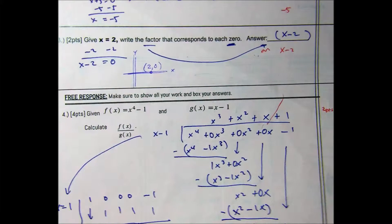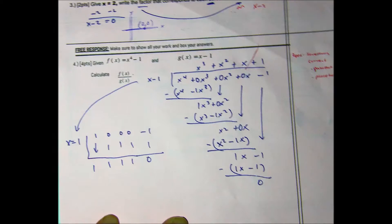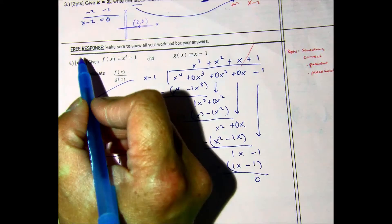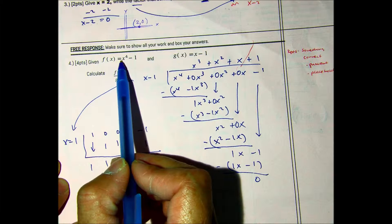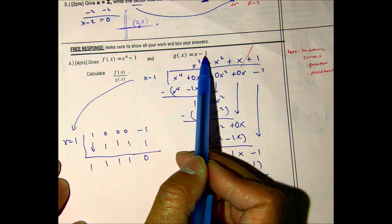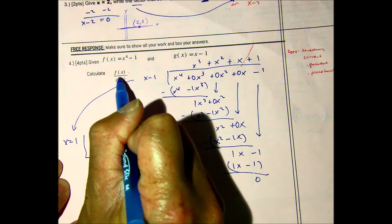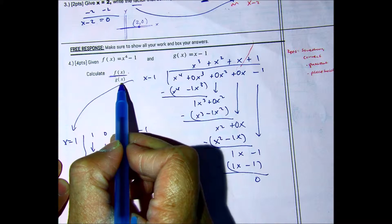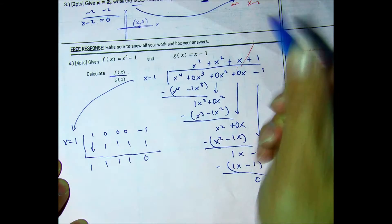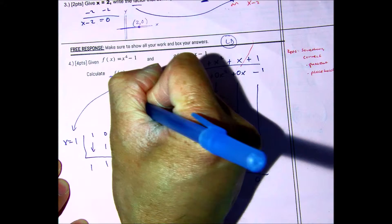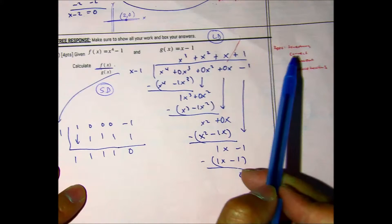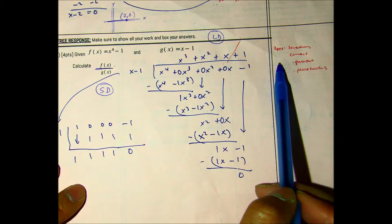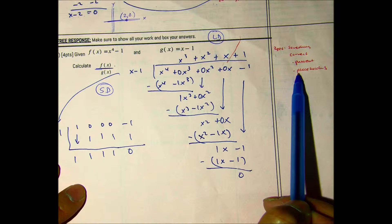Question number 4. For your response, make sure to show all your work and box your answers. I took this question directly from your packet. Given f of x equals x to the 4th minus 1, and g of x equals x minus 1, calculate f of x divided by g of x. Class doesn't tell us which method to use. No. So you could have used long division or synthetic division. Now, what's most essential in this problem is that you use the placeholders. So you got partial credit, meaning you didn't get this problem right, if you had something correct, something right in the quotient, or the placeholders.